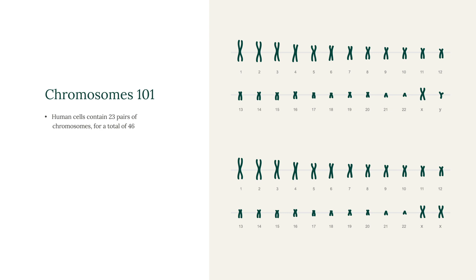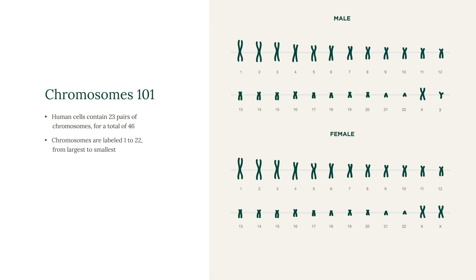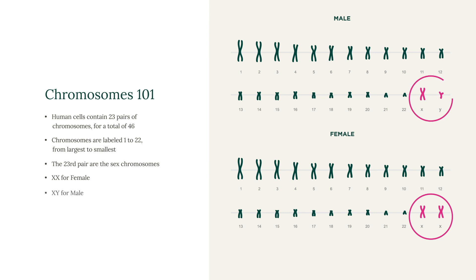In humans, all nucleated cells contain 23 pairs of chromosomes, for a total of 46. The chromosomes are labelled 1 to 22, from largest to smallest. The 23rd pair are the sex chromosomes — XX for female or XY for male.